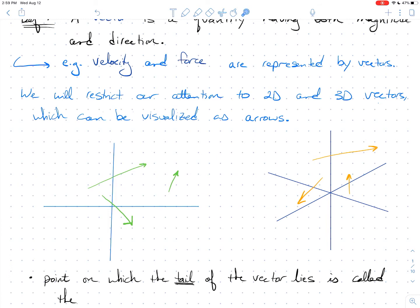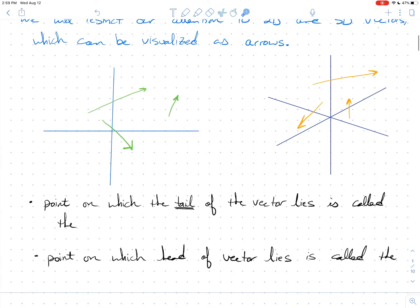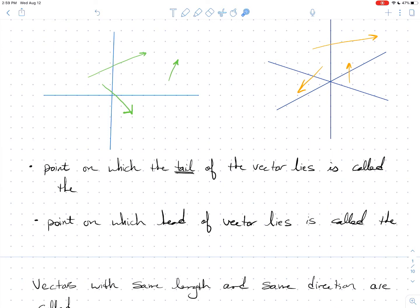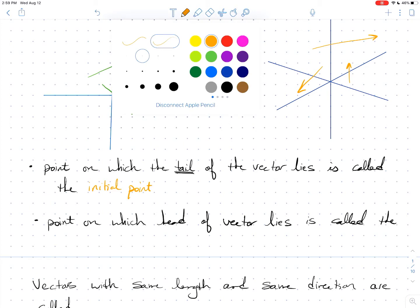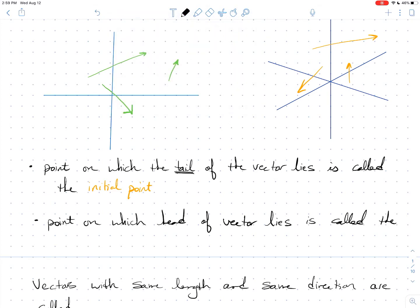A couple of terminology points: each vector has a point at its tail and a point at its head. The point where the tail of the vector lies is called the initial point, and the point where the head of the vector lies is called the terminal point. These are points in space.